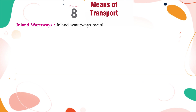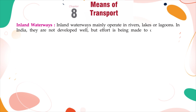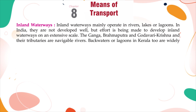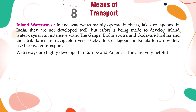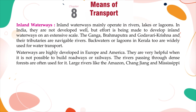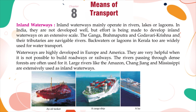Inland Waterways: Inland waterways mainly operate in rivers, lakes, or lagoons. In India, they are not developed well, but effort is being made to develop inland waterways on an extensive scale. The Ganga, Brahmaputra, Godavari, Krishna, and their tributaries are navigable rivers. Backwaters or lagoons in Kerala are also widely used for water transport. Waterways are highly developed in Europe and America, and are very helpful when it is not possible to build roadways or railways. The rivers passing through dense forests are often used for it. Large rivers like the Amazon, Changjiang, and Mississippi are extensively used as inland waterways.